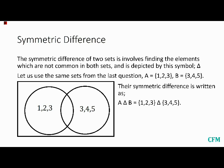So we simply union A minus B, which is 1, 2. We union that with B minus A, which is 3, 4, which equals 1, 2, 4, and 5.